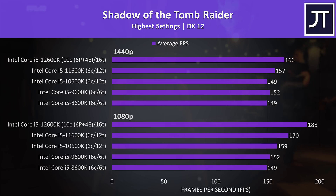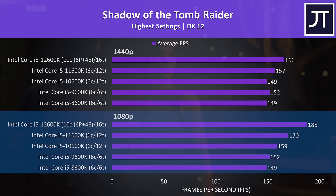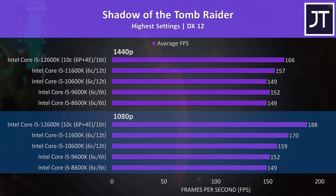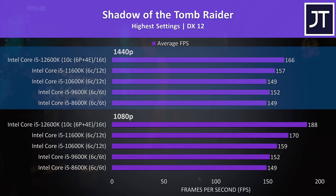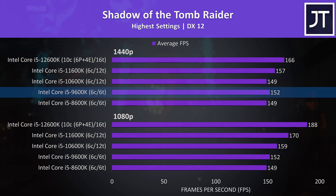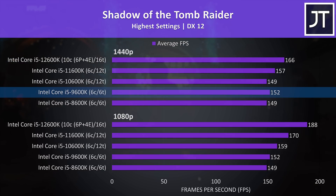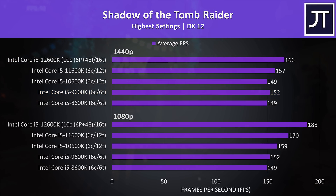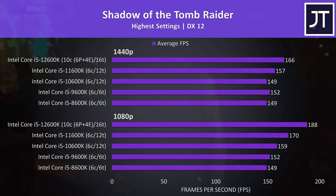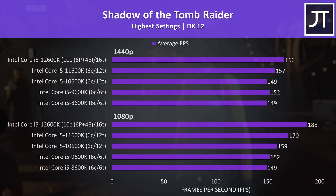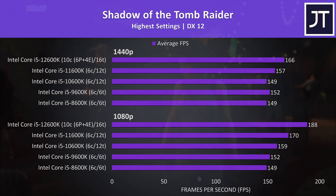Shadow of the Tomb Raider was again tested with the game's benchmark. At 1080p results progressively improve with newer CPUs as expected, but at 1440p results get a little messier, with 9th gen coming out ahead of both 8th and 10th gen, though it's only a 3 frame difference. This was also noted in the i7 comparison — a link is in the description.